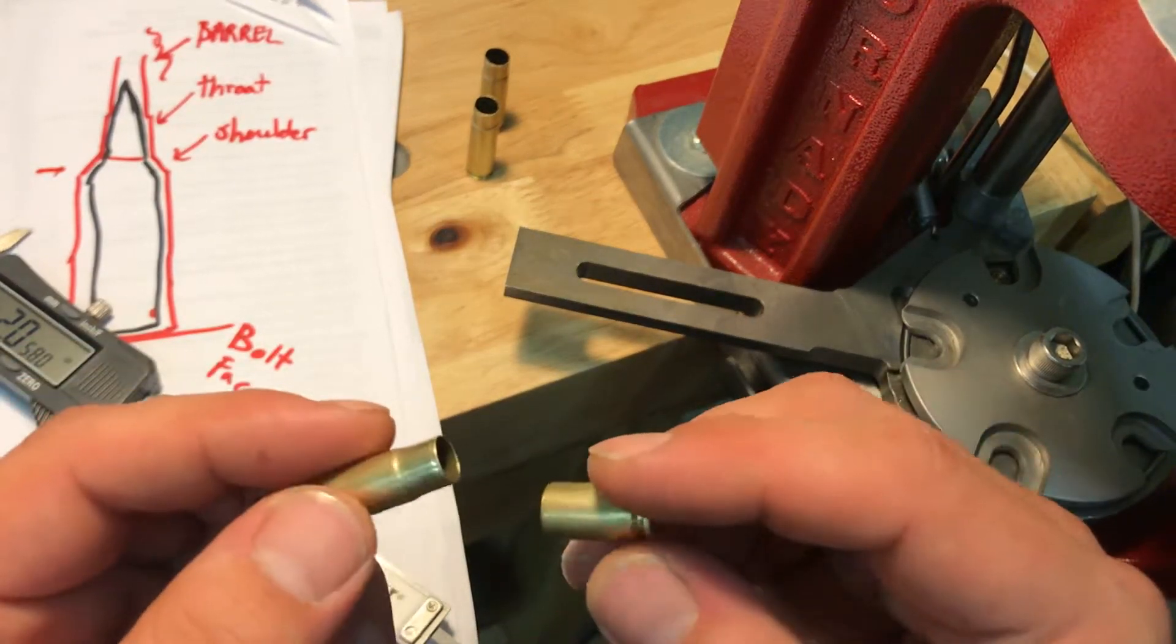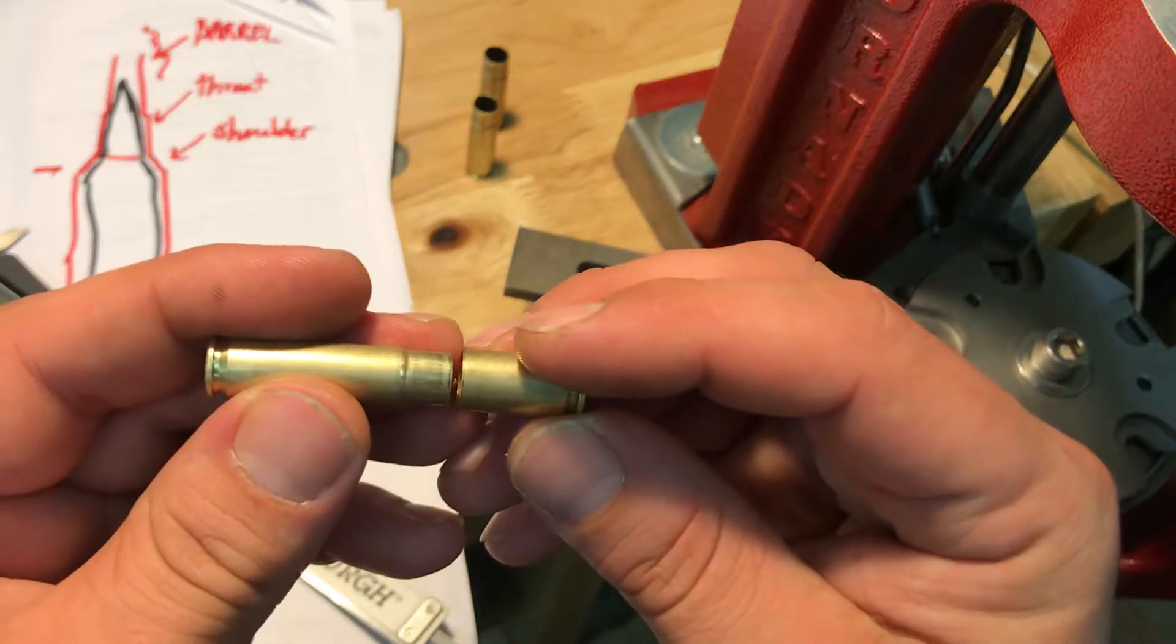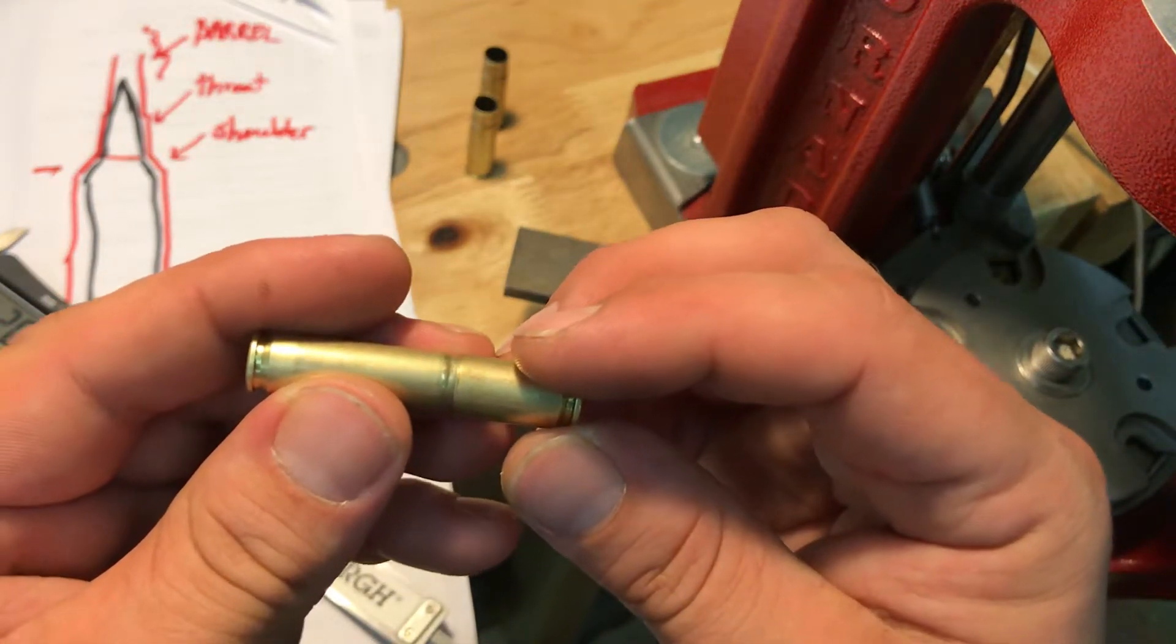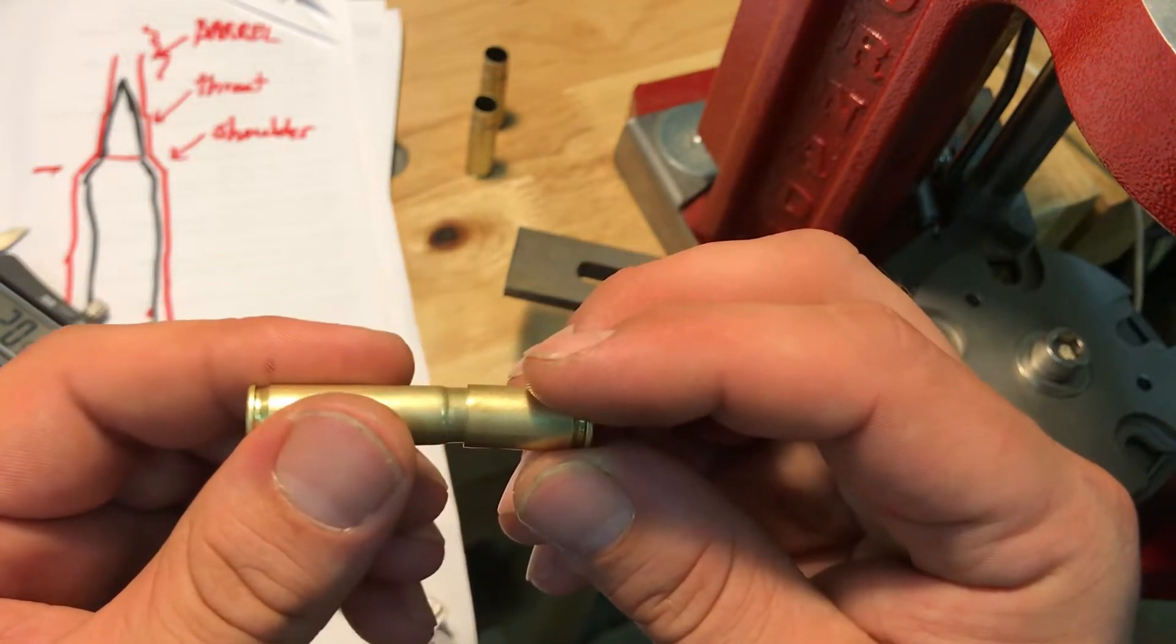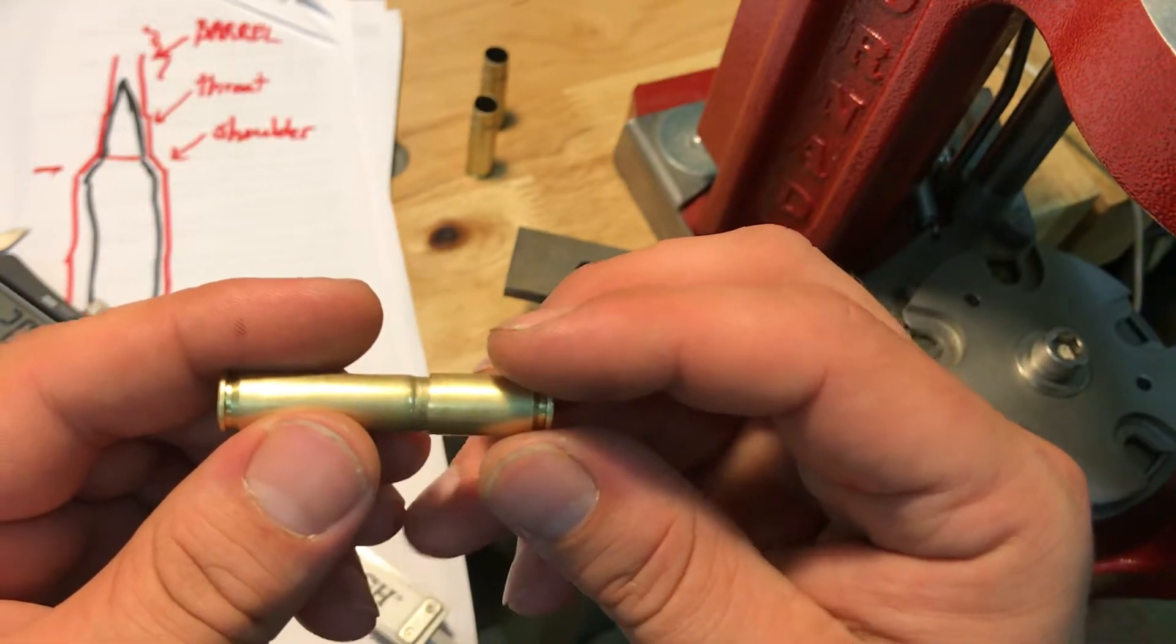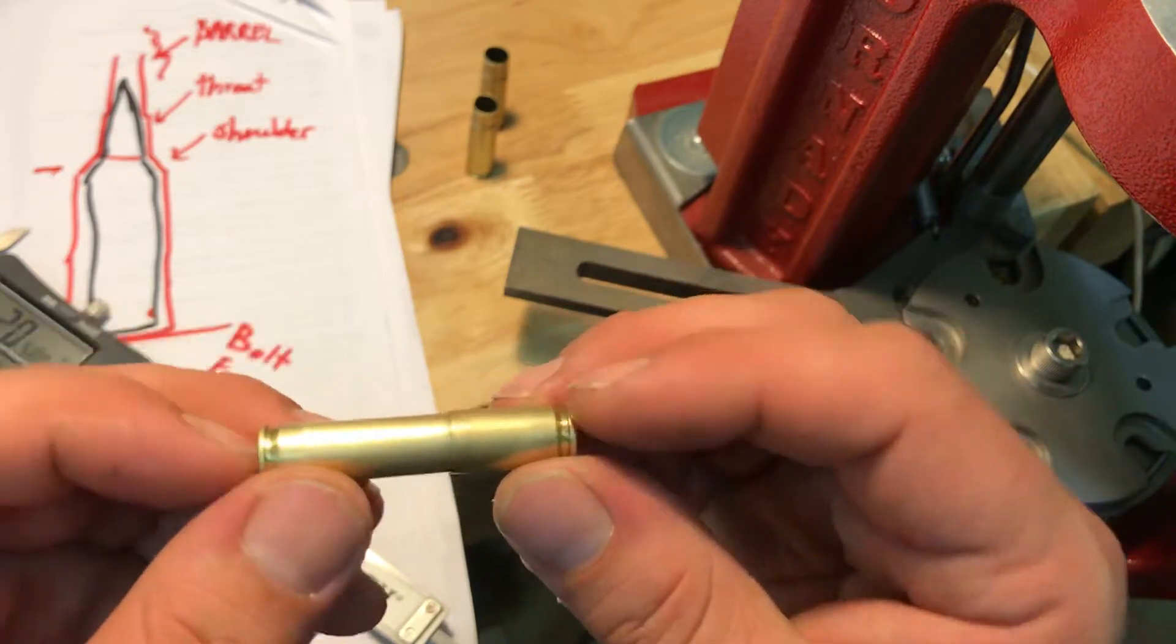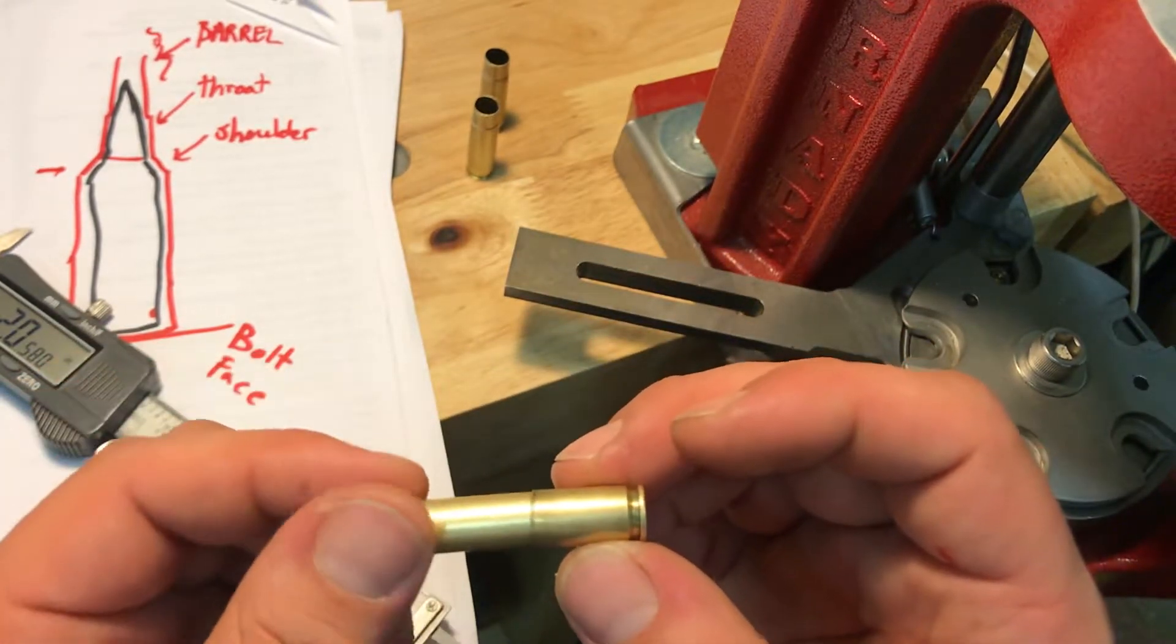So we go here and we can see this almost slides completely over the shoulder. So we'll try and do this trick with the 300 blackout and see how it goes.